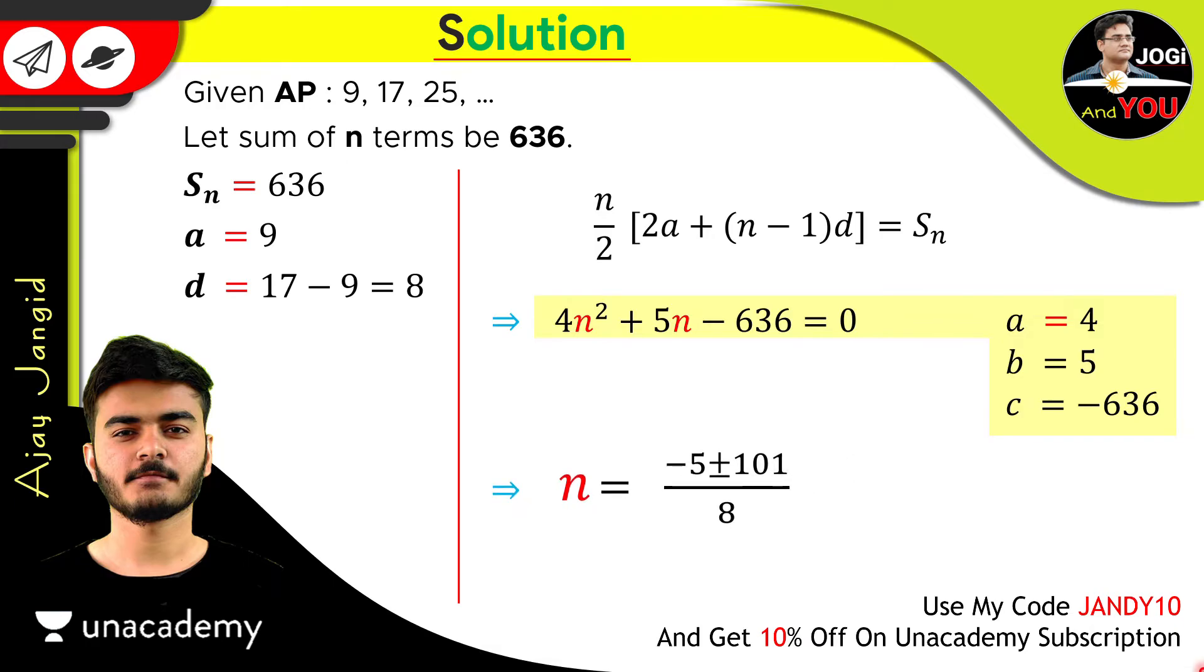So we have plus and minus here. So just use both separately. And after calculating, we have this. And then we have two values of n, which are n is equal to 12 or minus 53 upon 4.